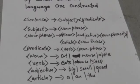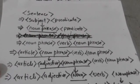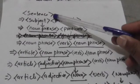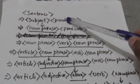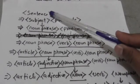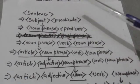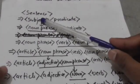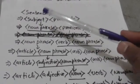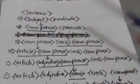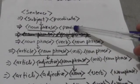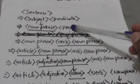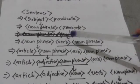By using these rules we can form many sentences. Now let us see how we can form sentences by using these rules. We know that a sentence can be a subject followed by a predicate, so here I have replaced the sentence by subject followed by predicate. Subject can be a noun phrase, so here I have replaced the subject by noun phrase. Predicate can be a verb followed by noun phrase, so here I have replaced the predicate by verb followed by noun phrase.